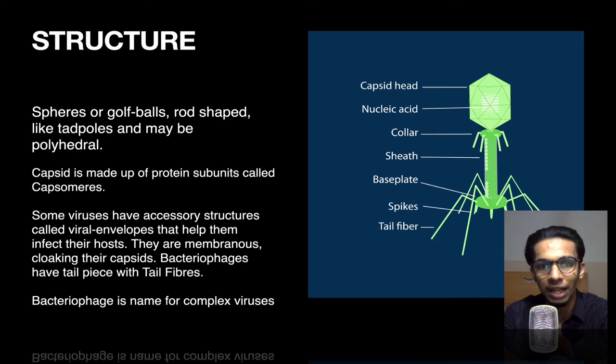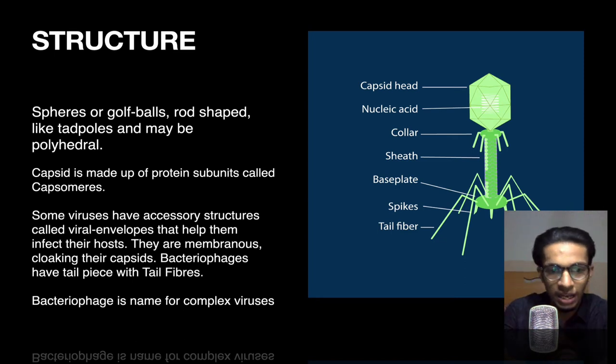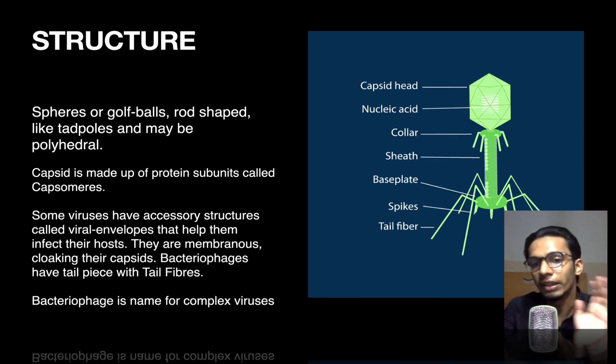Some viruses have accessory structures called viral envelopes that help them infect their host. They may have some extreme modification according to their use and method of attacking the host cell. They are membranous, cloaking their capsids. Bacteriophages have tail pieces with tail fibers. Bacteriophage is the name for complex viruses. Phage is a name for viruses, while bacteria here denotes that these viruses attack bacterial cells. These are the most advanced viruses in the whole classification.